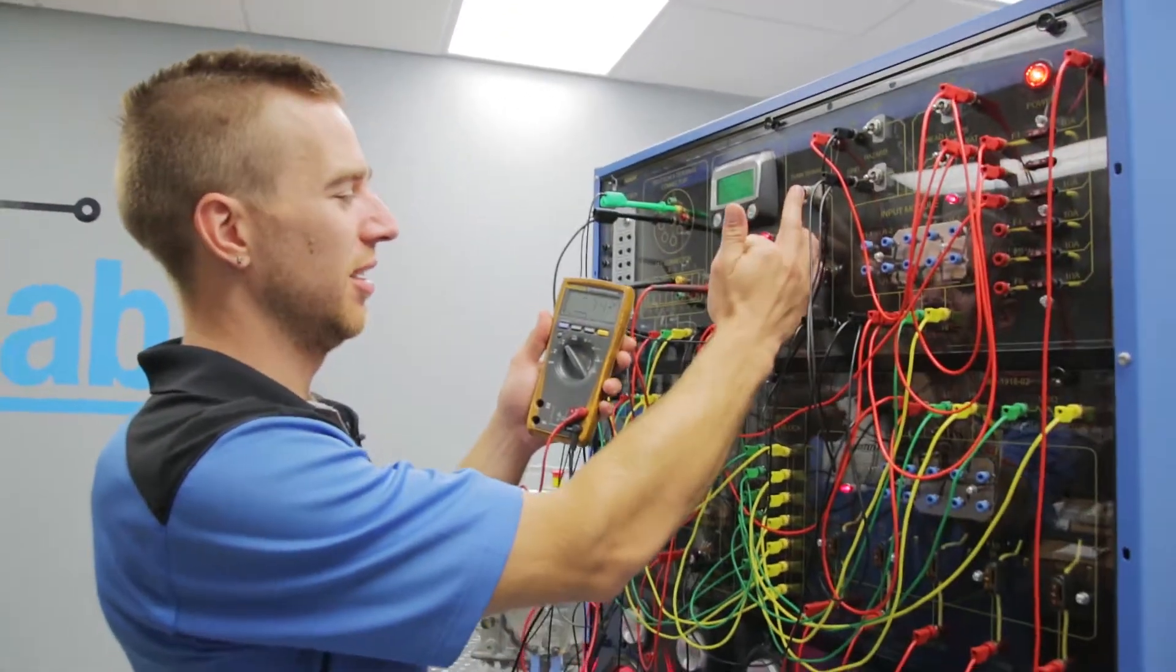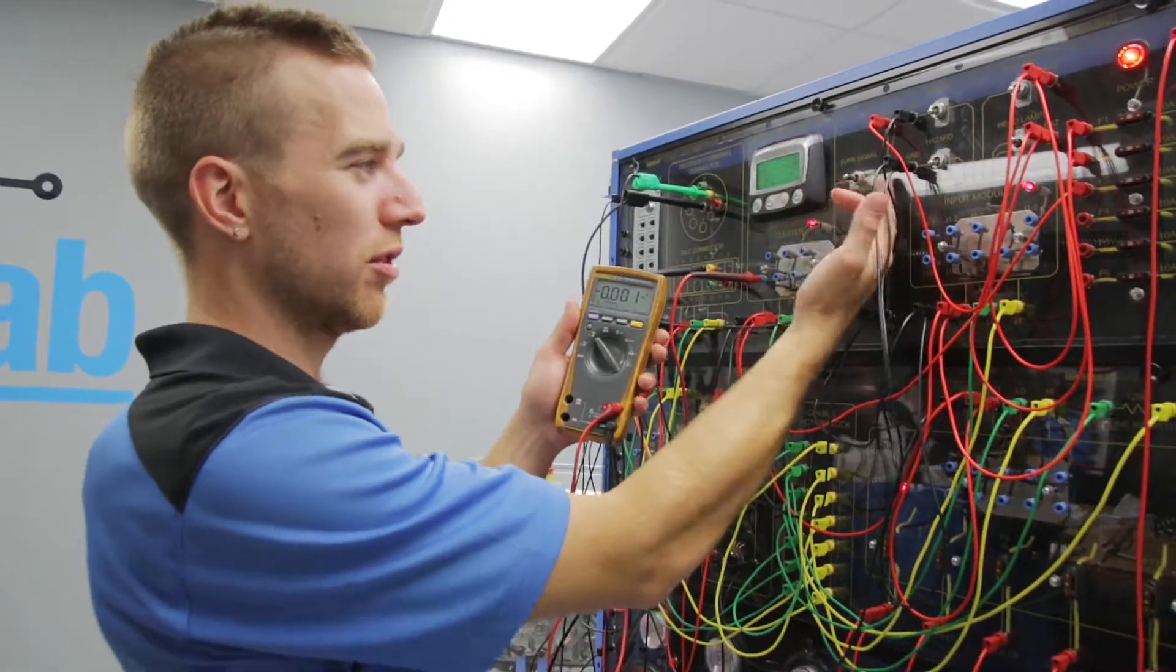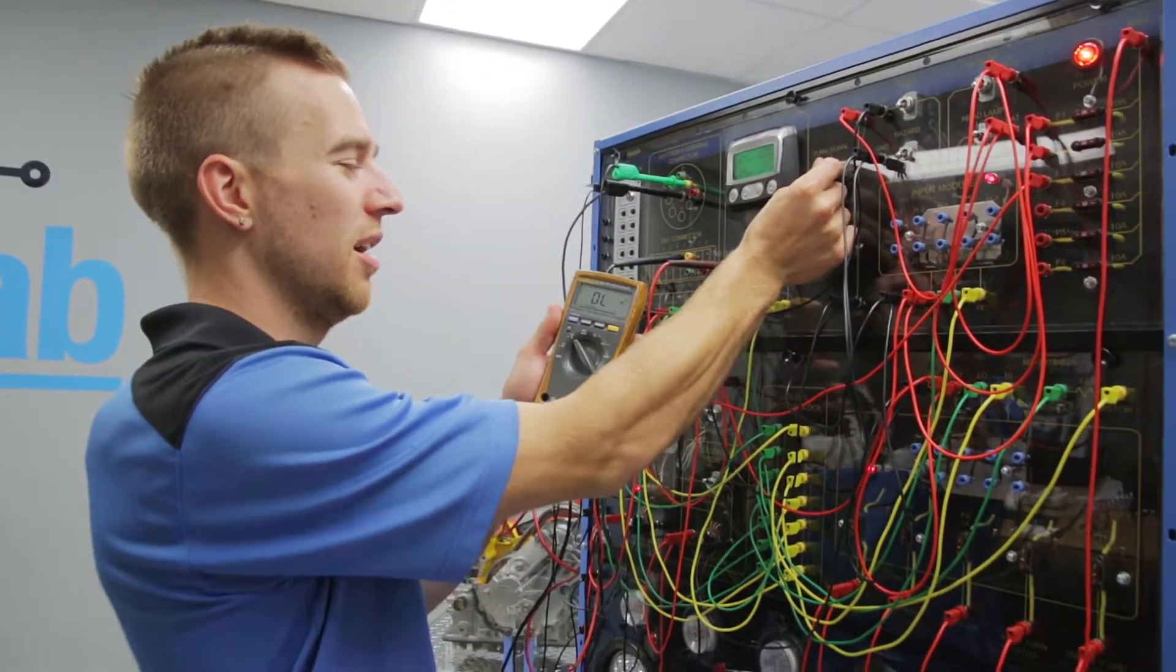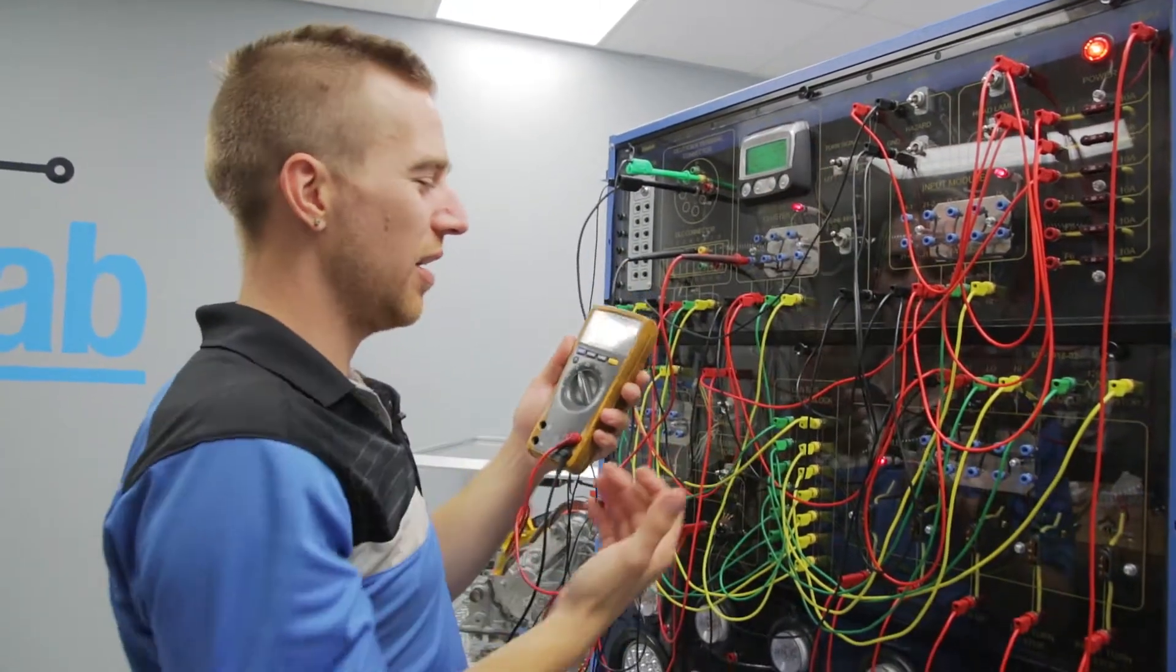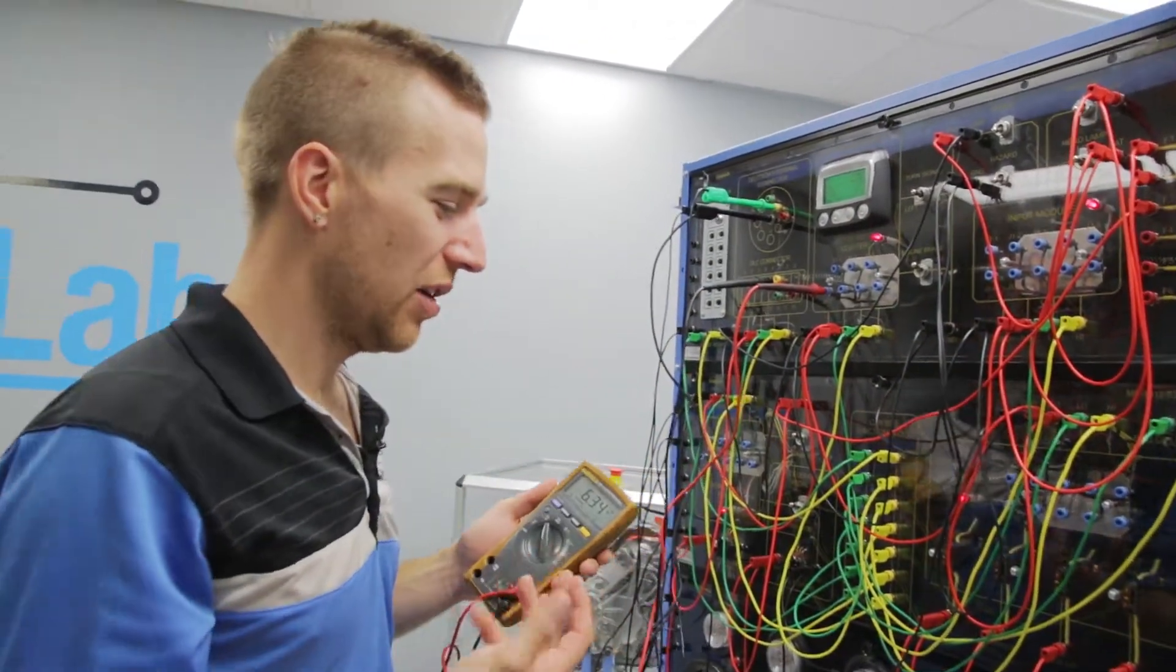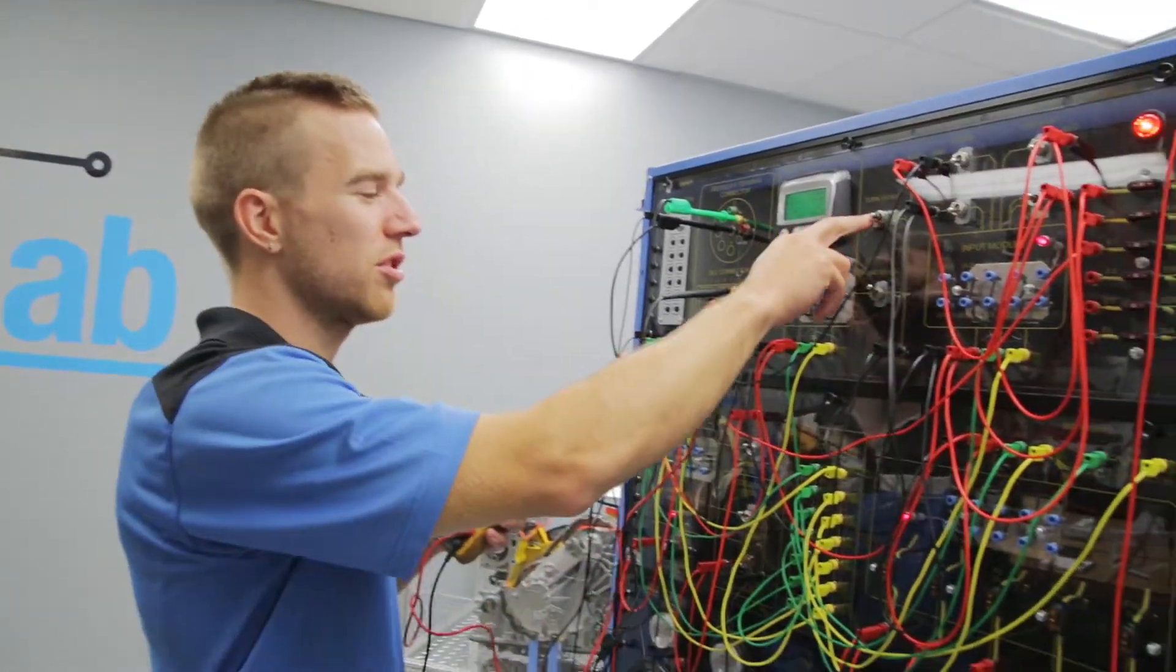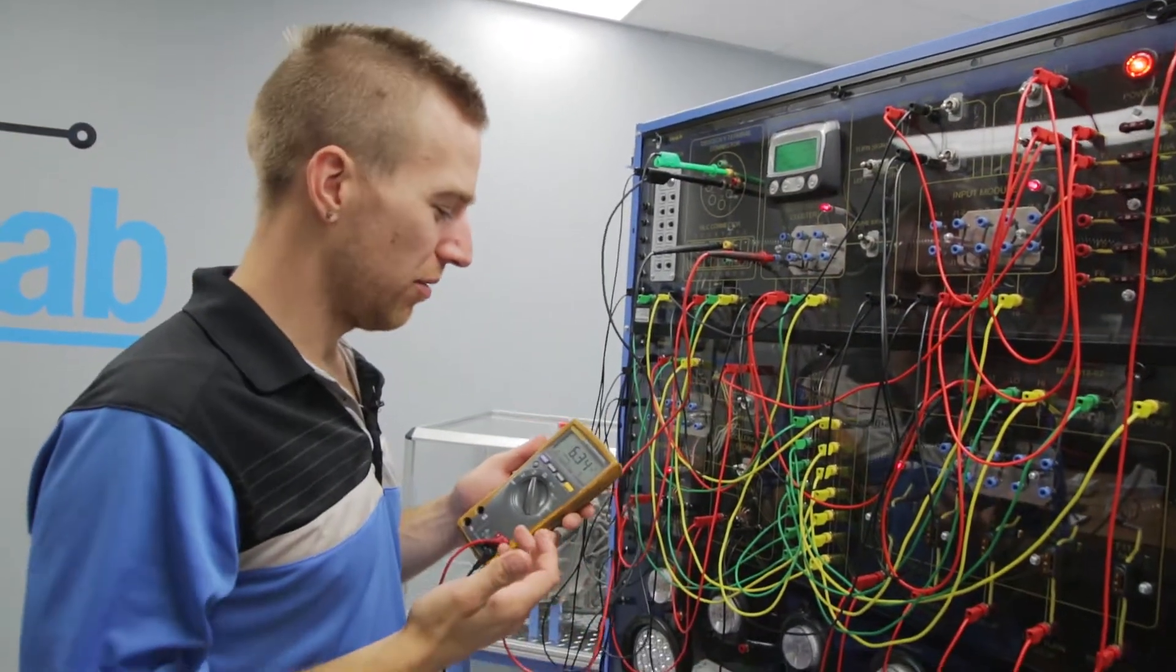When we go left we get zero volts or ground, when we go right we get 12 volts. So that gives us three positions with just one wire input to the control module.